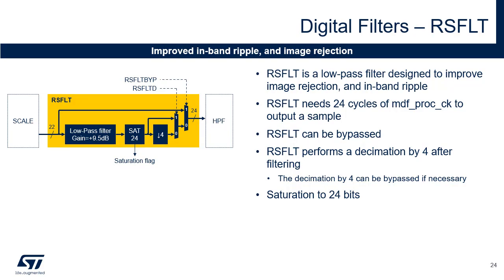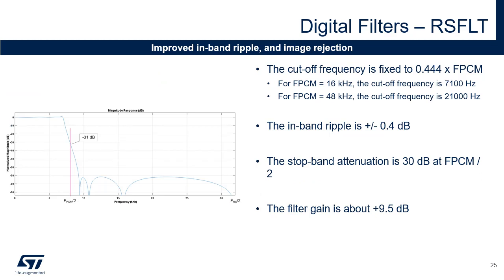The reshape filter is a low-pass filter designed to improve image rejection and in-band ripple. The reshape filter performs a decimation by 4 after filtering. The reshape filter can be completely bypassed or it's possible to bypass the decimation by 4 only. This feature can be helpful if additional processing must be performed by the software. The reshape filter needs 24 cycles of MDF processing clock to output a sample. A saturation to 24 bits is performed after the low-pass filter. The following figure shows the transfer function of the reshape filter alone without the decimation by 4. The cut-off frequency is fixed to 0.444 times FPCM. The in-band ripple is plus or minus 0.4 decibel. The stop-band attenuation is 30 decibels at FPCM divided by 2. The out-of-band noise is attenuated by a bit more than 70 decibel. The filter gain is about plus 9.5 decibel.